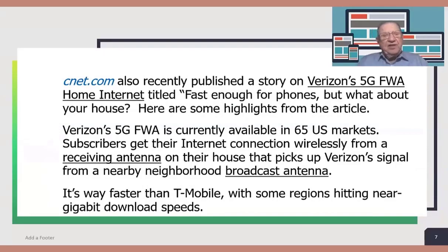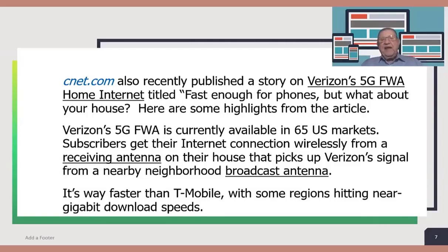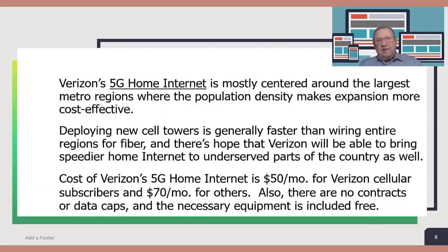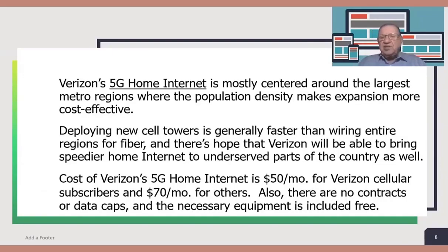CNET.com also recently published a story on Verizon's 5G Fixed Wireless Access Home Internet, titled 'Fast Enough for Phones, But What About Your House?' Here are some highlights: Verizon's 5G Fixed Wireless Access is currently available in 65 US markets. Subscribers get their internet connection wirelessly from a receiving antenna on their house that picks up Verizon's signal from a nearby neighborhood broadcast antenna. It's way faster than T-Mobile, with some regions hitting near-gigabit download speeds. Verizon's 5G Home Internet is mostly centered around large metro regions where population density makes expansion more cost effective, though there is hope it will reach underserved parts of the country.